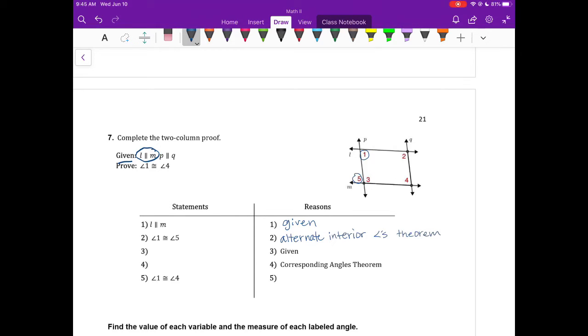Alternate interior angles theorem. Number three, it says given. I've used the L is parallel to M already for given, so the part that I need to write on number three would be P is parallel to Q. Next, I'm going to use the corresponding angle theorem. Now I have one is congruent to five and I need to get one is congruent to four. So if I can show five is congruent to four, then I can use the transitive property to show one is congruent to four. Five would be congruent to four, and that would be because of the corresponding angles theorem. And since one is congruent to five and five is congruent to four, one would have to be congruent to four because of the transitive property of equality.